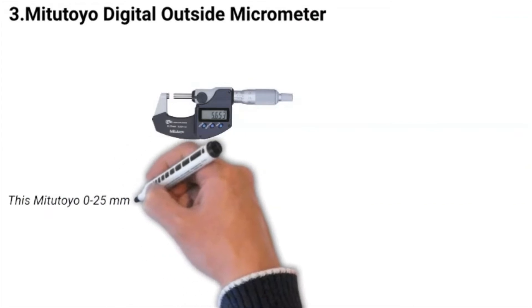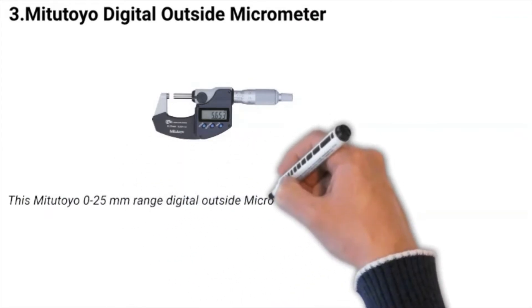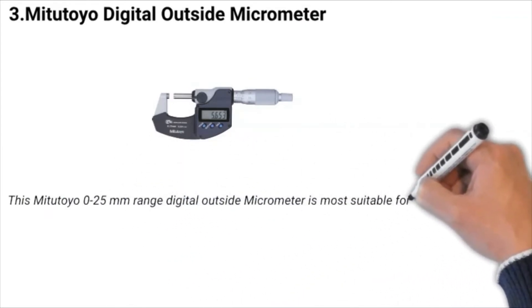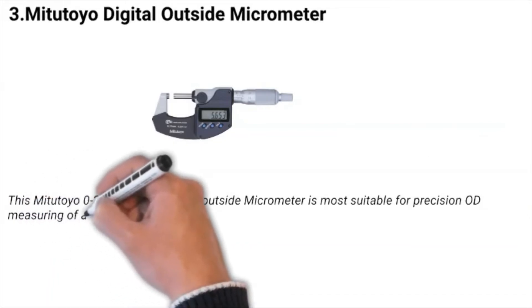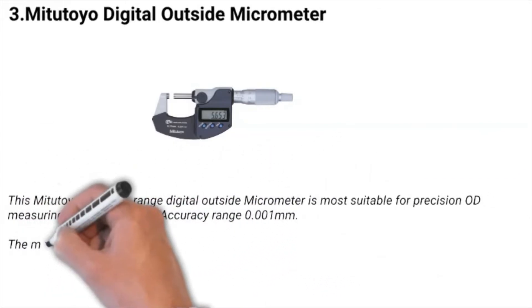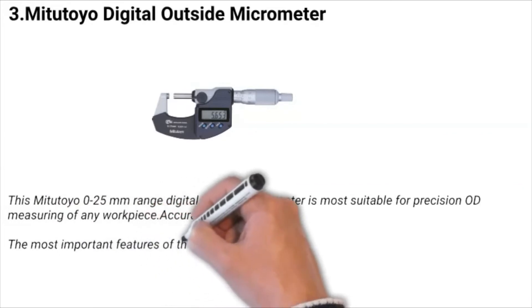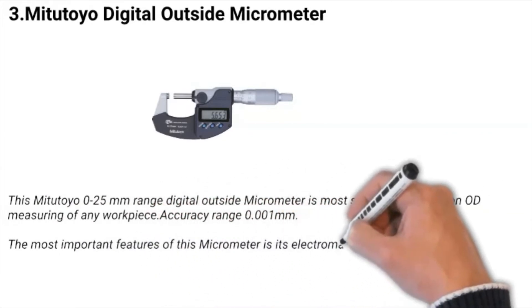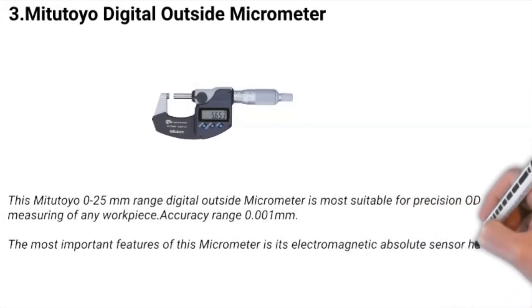Number three: Mitutoyo Digital Outside Micrometer. This Mitutoyo 0 to 25mm LCD digital outside micrometer is most suitable for precision outer diameter measurement of any workpiece. Accuracy range 0.01mm. The most important feature of this micrometer is its electromagnetic absolute sensor has strong resistance to environmental conditions such as dirt, oil, and water that can cause false readings.